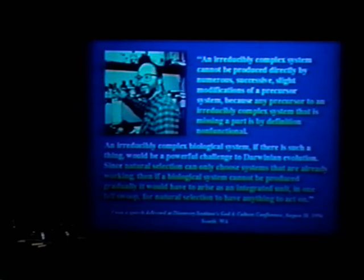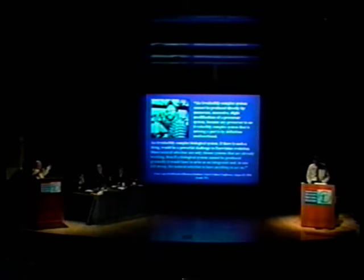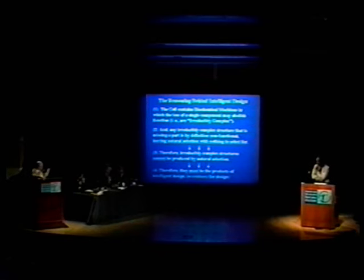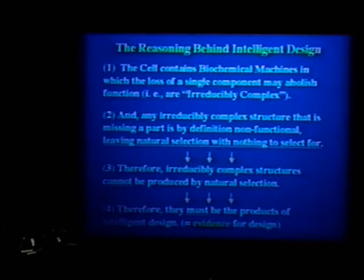What you said — again your words — is: if a biological system cannot be produced gradually, it has to arise as an integrated unit in one fell swoop for natural selection to have anything to act upon. Later, in a later chapter, I talked about Stuart Kauffman's work on complexity theory, which he thinks can produce systems in one fell swoop but not by intelligent design, and Lynn Margulis's ideas of symbiosis, which could produce new functions but not by intelligent design. I was just making the more limited point that you'd have to get all the parts together for something to act on, and it's only in chapter nine that I argued for intelligence.